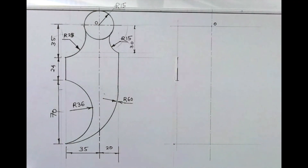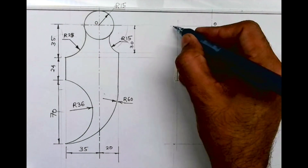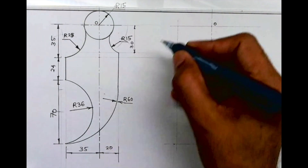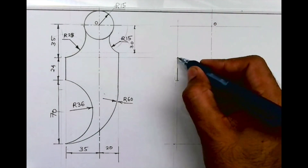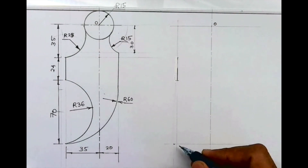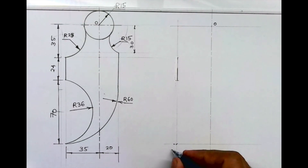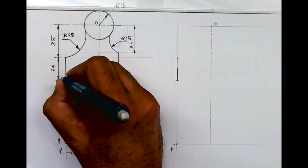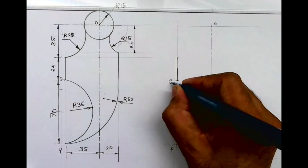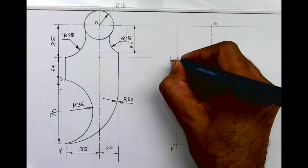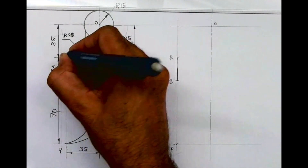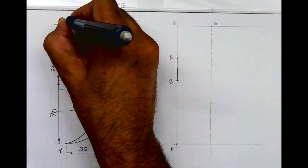Welcome to technical drawing. Today we'll see this sum and redraw it. First we'll mark O, then go 35 on the left side, then down by 35, then 24, then 70. We'll mark these points as P, Q, R, and S.